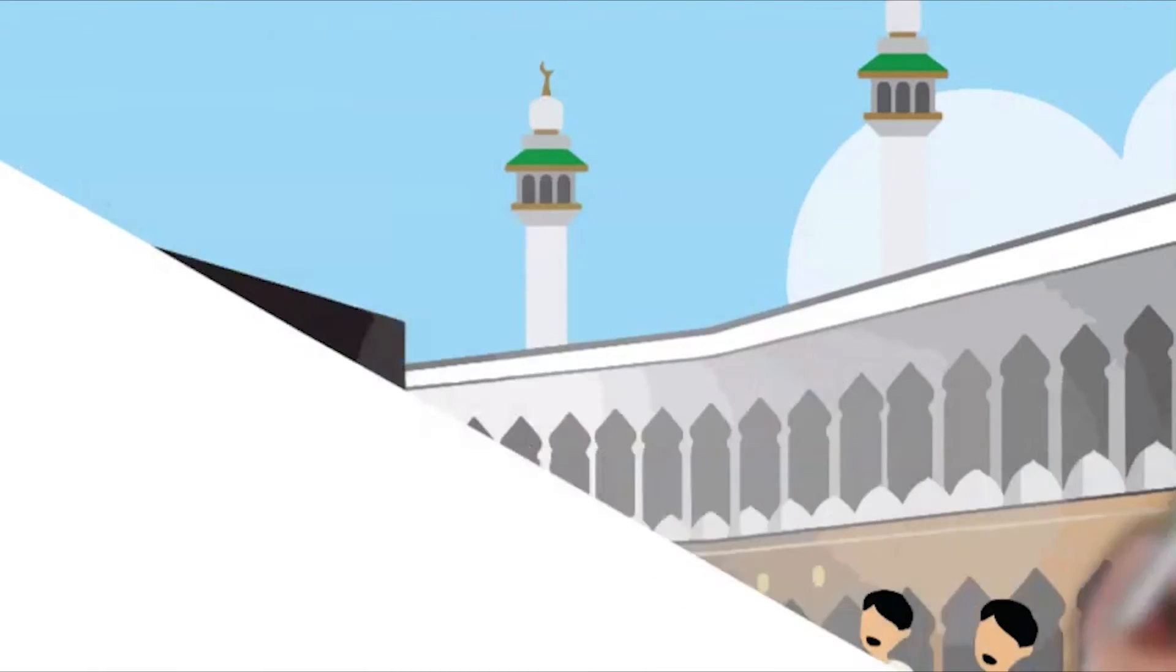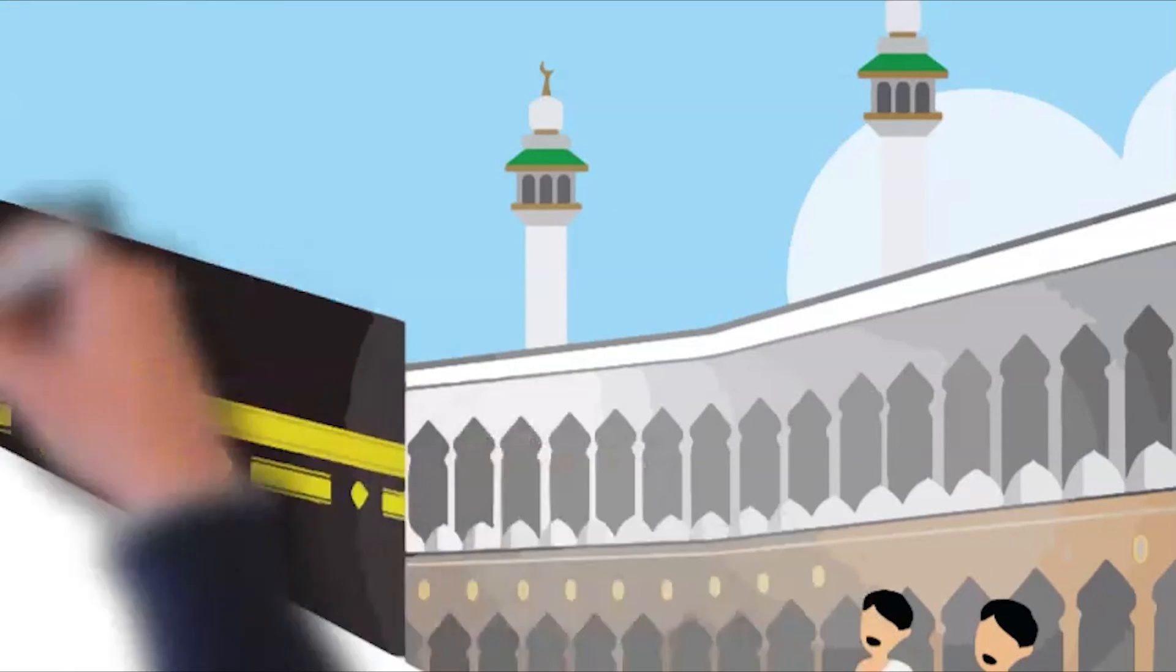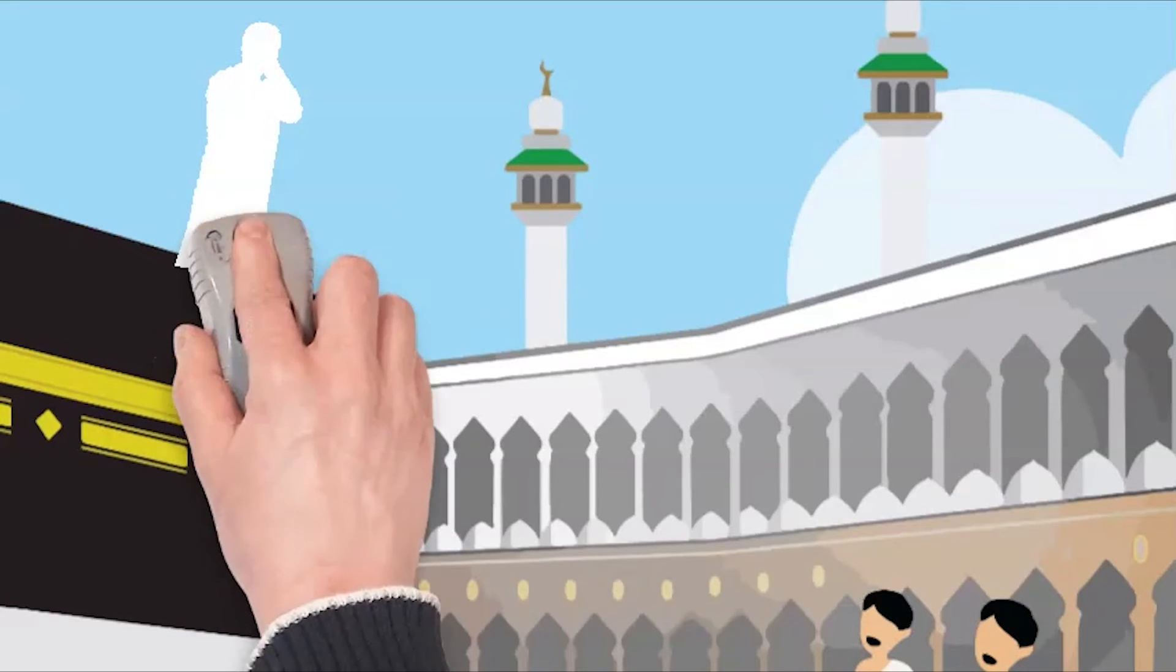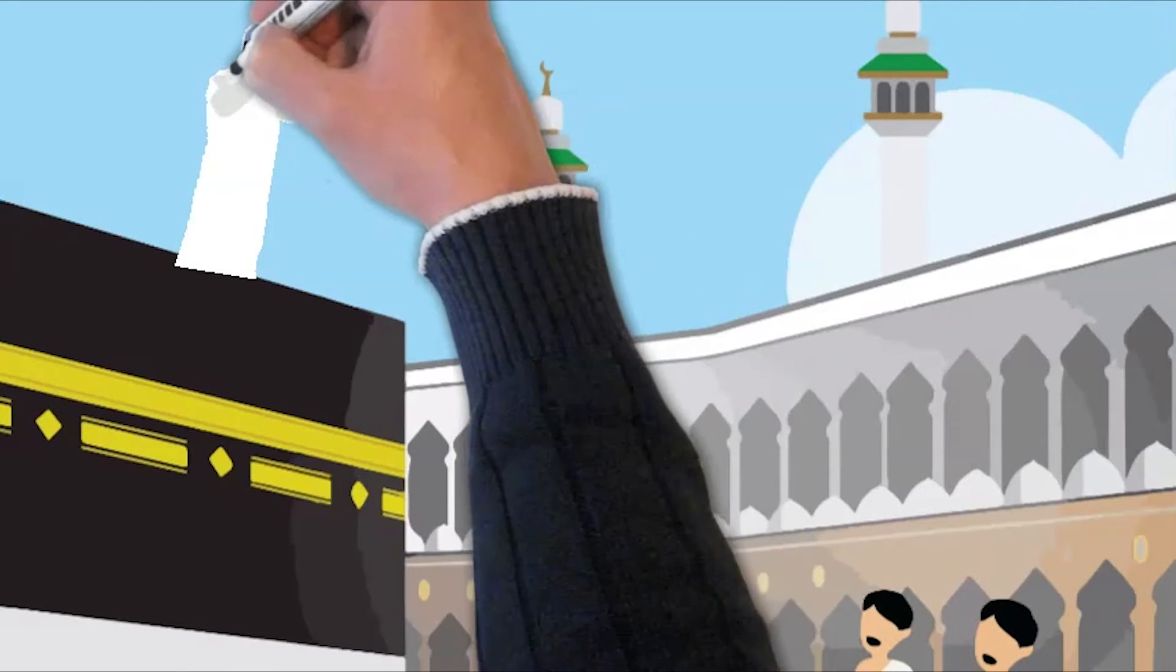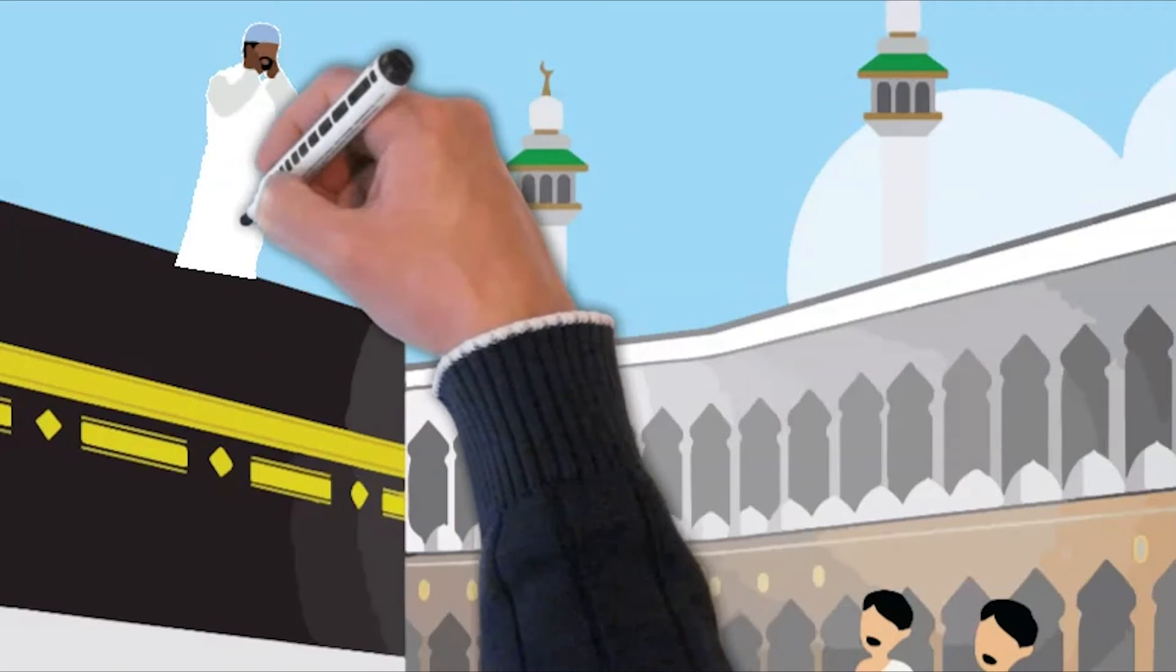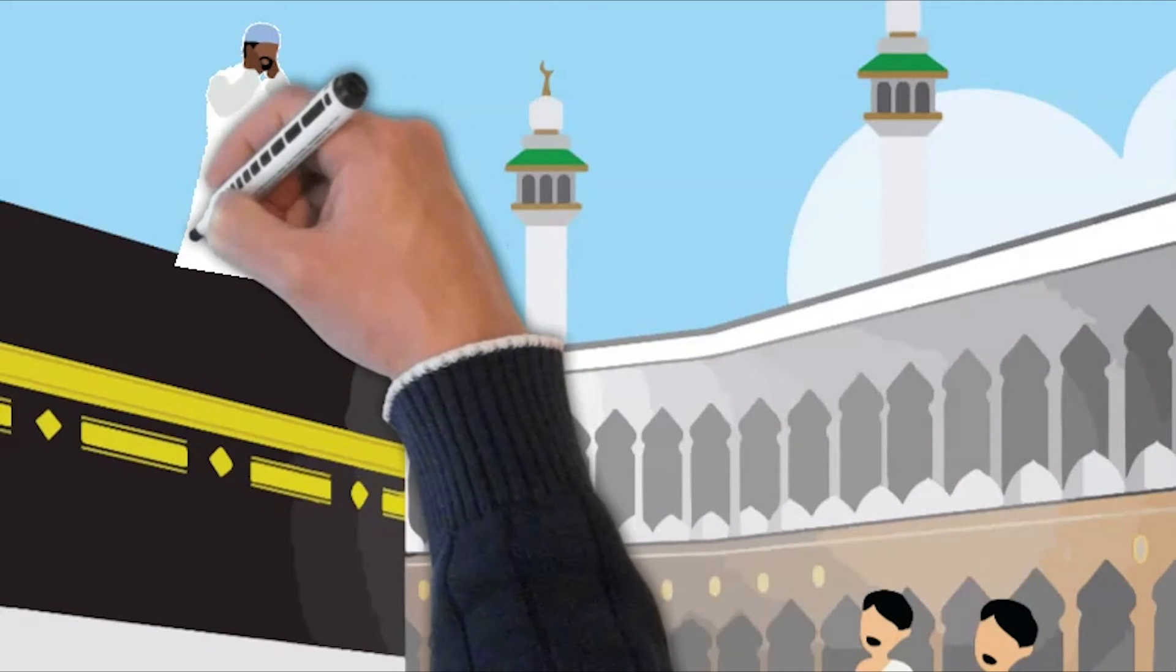This was the first adhan ever given in Mecca. The Quraysh could never have imagined that a black man would be given preference over them. This was due to Bilal's devotion to Islam and his piety that he rose to such heights of spiritual attainment and the equity in Islam to allow for such opportunities.